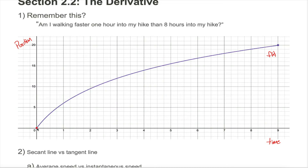The fact that (0, 0) is on the graph just means that after zero time at the start of my hike, I haven't gone anywhere. But since (1, 6) is on my graph, one hour into my hike I had apparently traveled 6 miles. We answered lots of questions with this example, but one question I asked and never really answered is whether I'm walking faster 1 hour into my hike than 8 hours into my hike.